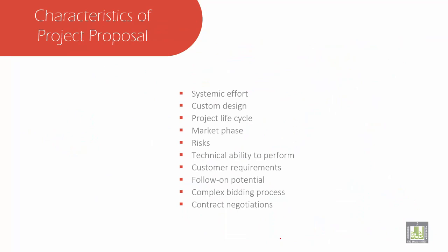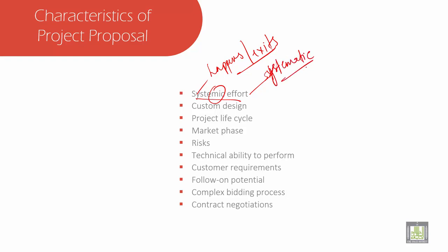What are the characteristics of a project proposal? First is systemic — systemic means something that happens or exists throughout the whole system. Then we have another one known as systematic. Systematic is something that is intentional, methodological, or implemented — it is something like methodological, meaning a plan. So systemic and systematic are different from each other.